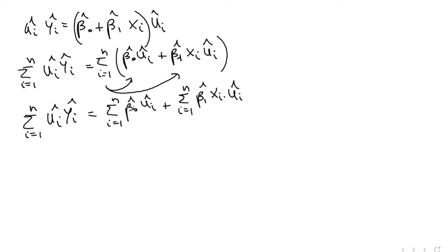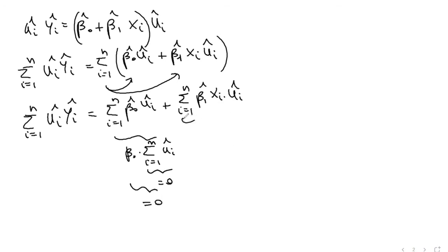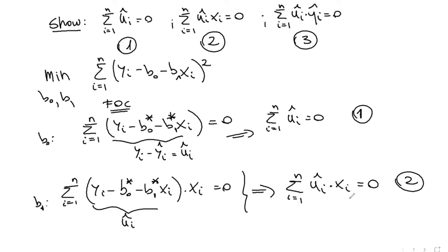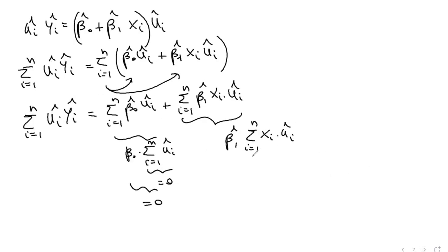Since beta_0_hat is a constant, we can pull it out of the summation, leaving beta_0_hat times the sum of u_hat_i — but we already showed the sum of u_hat_i equals 0, so this term vanishes. Similarly, pulling beta_1_hat out of the second sum leaves the sum of x_i * u_hat_i, which we showed equals 0 from the second first-order condition. Therefore the sum of u_hat_i * y_hat_i equals 0 plus 0, which proves property 3.